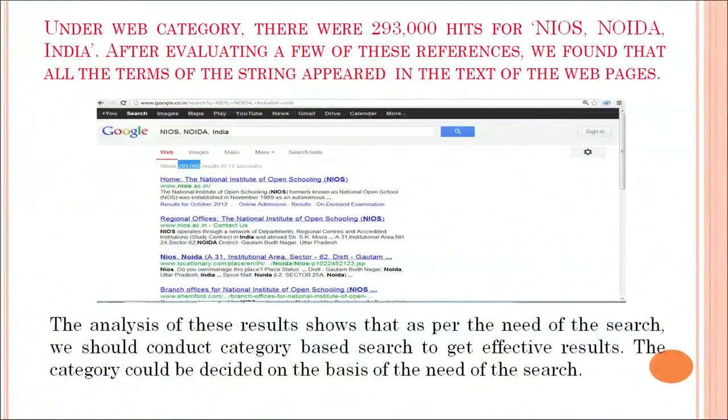All the terms in the string appeared in the text of these web pages. The analysis of these results shows that as per the need of the search, we should conduct category-based search. To get effective results, the category should be decided on the basis of the need of the search. If you need to search for a map, you can search for a map. If you need to search for images, you can search for images only, or if you want some information about an institution, you can search particularly for that.